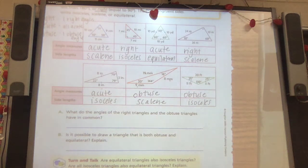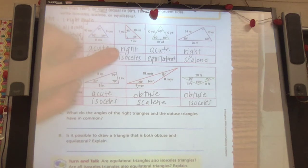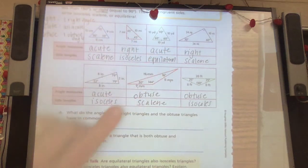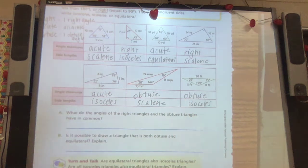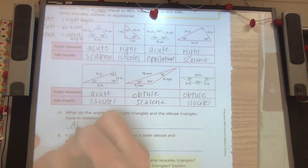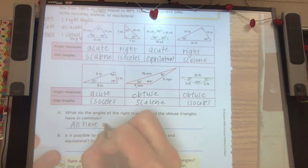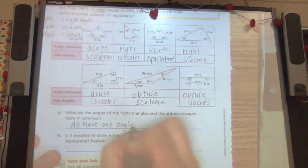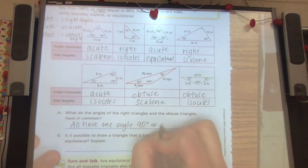Okay, so this says, what do the angles of the right triangles and the obtuse triangles have in common? One thing I notice is they all have one angle, 90 degrees or greater.